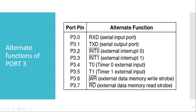P3.6 is the write bar (WR̄) pin, used whenever we want to interface external memory to 8051 and write to the external RAM. P3.7 is the read bar (RD̄) pin, an active low pin. Whenever the CPU wants to read anything from external RAM, it makes this pin low and reads the data from external memory. So either Port 3 can be used as a simple digital I/O port to interface external peripherals, or we can make use of these pins for their alternate functions.